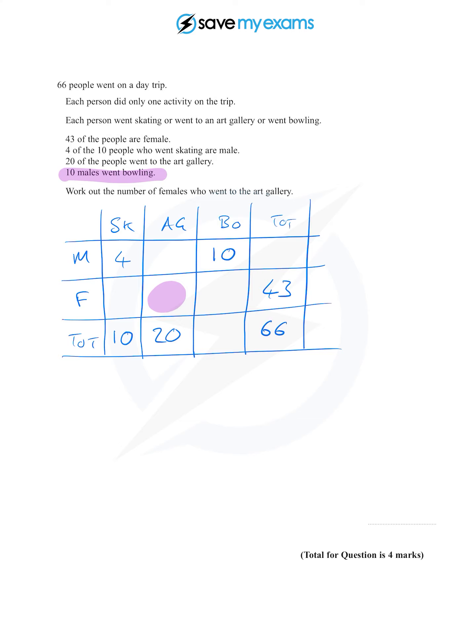You can check all that if you want to. Now we just start working things out anywhere where we have a row or a column where there's only one thing missing we can work out the other things. And we just keep going around the two-way table until we find what we want.